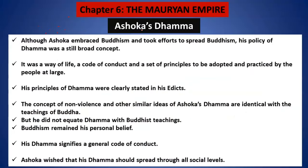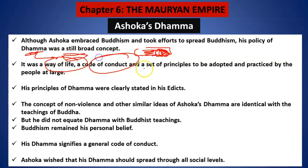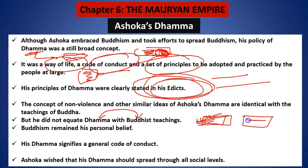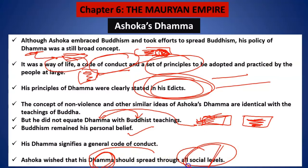Dhamma was Ashoka's philosophy through which he was trying to teach people. It was a way of life, a code of conduct, a set of principles — jo woh chahte the ki log follow karein. Clearly stated in his edicts — pillar edicts and rock edicts. One very important thing: don't try to equate Dhamma with Buddhist teaching. He accepted Buddhism, but he had his own principles of Dhamma. Buddhism was his personal belief, but Dhamma was something which he wanted everybody to understand. He wished that Dhamma should be spread through all social levels.